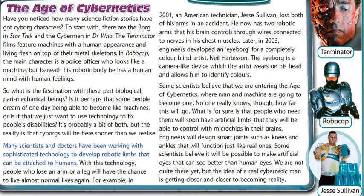Many scientists and doctors have been working with sophisticated technology to develop robotic limbs that can be attached to humans. With this technology, people who lose an arm or a leg will have the chance to live almost normal lives again. For example, in 2001, an American technician, Jesse Sullivan, lost both of his arms in an accident. He now has two robotic arms that his brain controls through wires connected to nerves in his chest muscles.